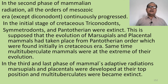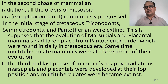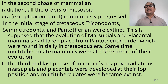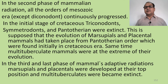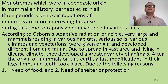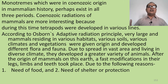In the second phase of mammalian radiation, all orders of the Mesozoic era except Diconodonts continuously progressed. In the initial stage of the Cretaceous, Diconodonts, Symmetrodonts, and Pantotheres became extinct. It is supposed that marsupials and placental mammals evolved from the Pantotherian order found initially in the Cretaceous. Multituberculata were at the extreme of their evolution. In the third and last phase, marsupials and placentals developed to their top position while multituberculates became extinct.